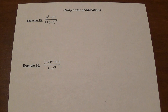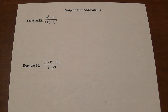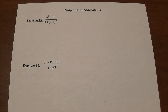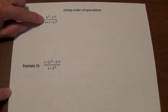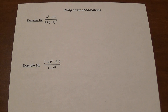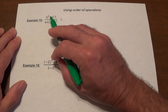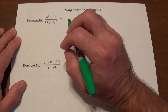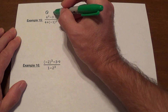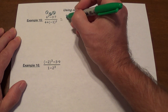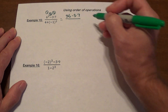When you have a fraction, remember that's an operation of division. Treat the numerator and denominator as if each were in parentheses — handle them separately first, and the fraction bar division is the very last thing you do. In the numerator here we have exponents, multiplication, and subtraction, so: exponents first, multiplication second, subtraction third.